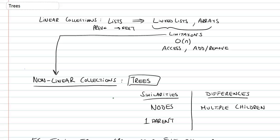In this video we're going to be looking at a new abstract data type, and that would be trees. So far we've been looking at lists as abstract data types, and these were linear collections.